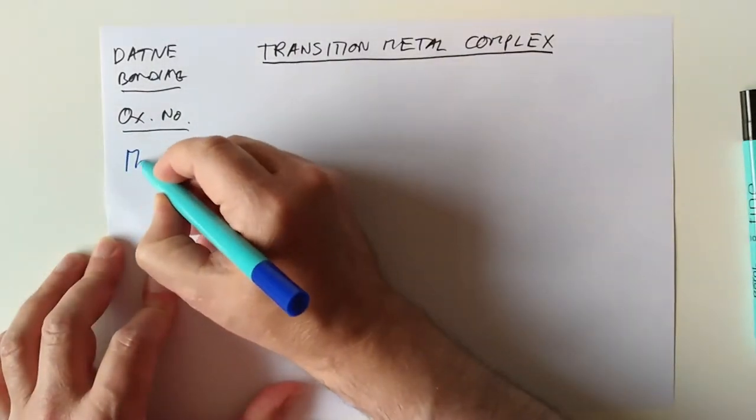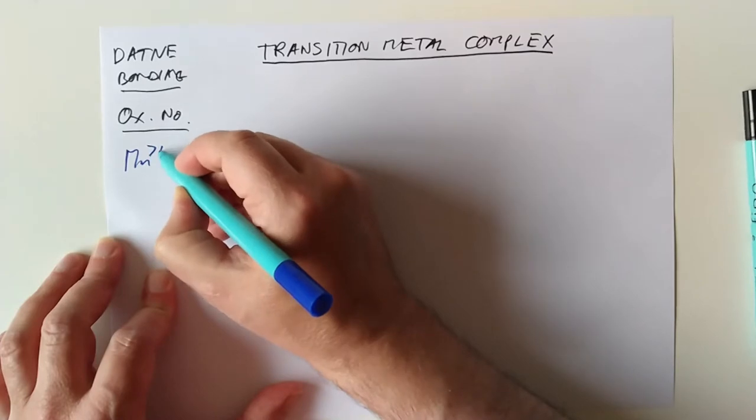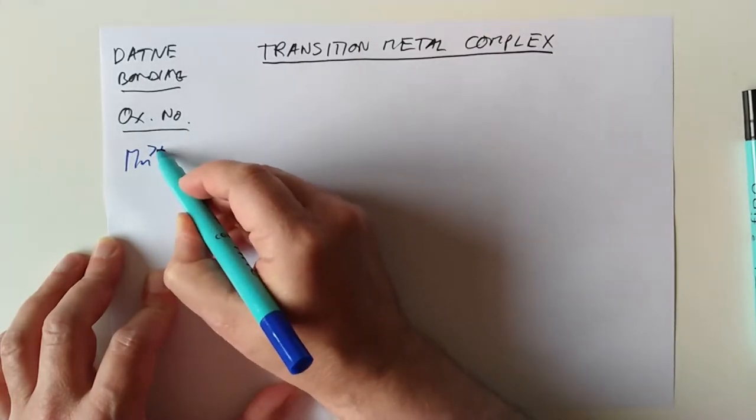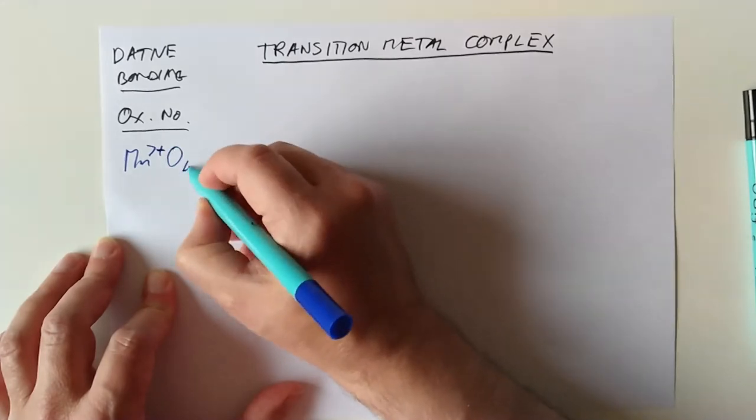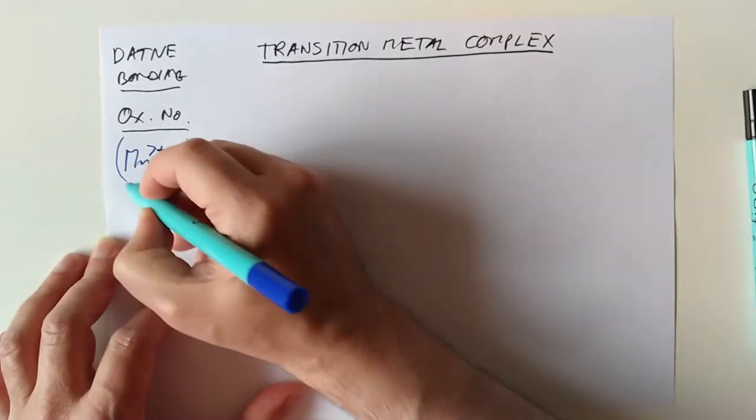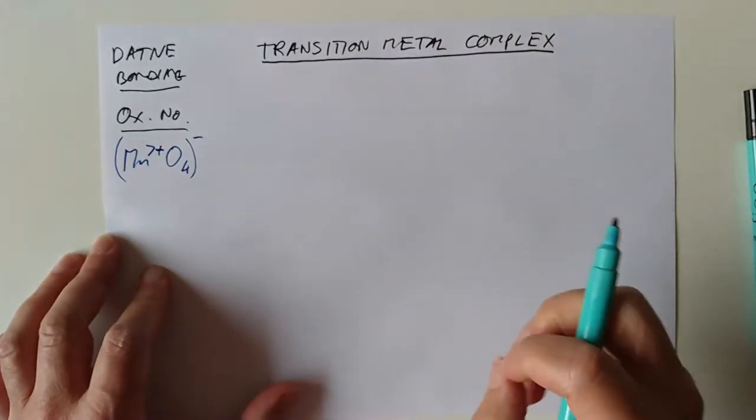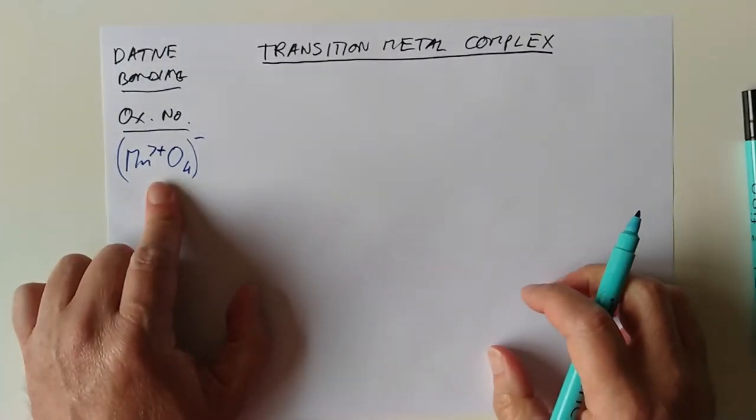A classic example that we looked at last time is Mn7+, manganese 7+. You can't have a plus 7 charge on a bare ion, and indeed you can't. And that's why it teams up with four oxygens, and the whole thing gets wrapped up together in a little bundle.